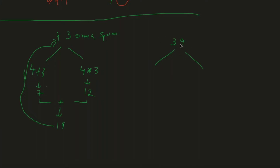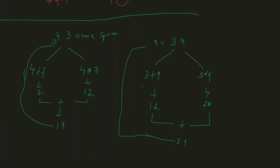Let me tell you what a special number is. If I take a number n equal to 39, I split it as 3 and 9. Then I compute 3 plus 9, which is 12, and 3 into 9, which is 27. Adding both gives 12 plus 27 equals 39 — and since 39 equals the original number, it is a special number.